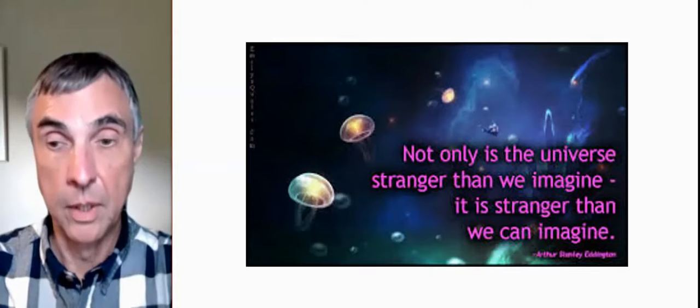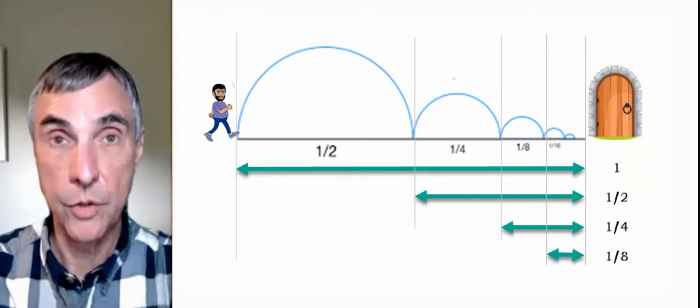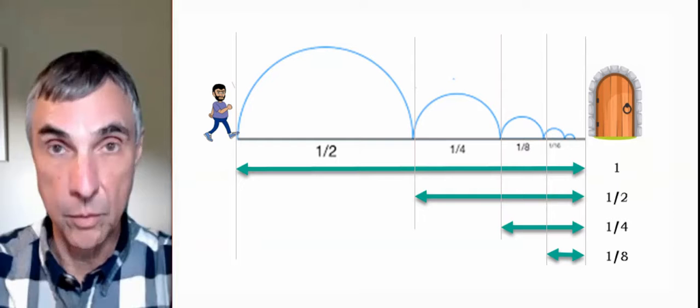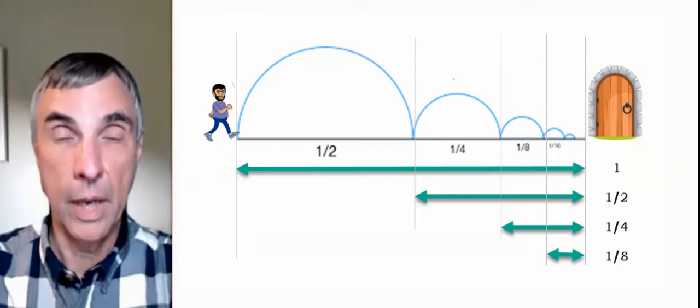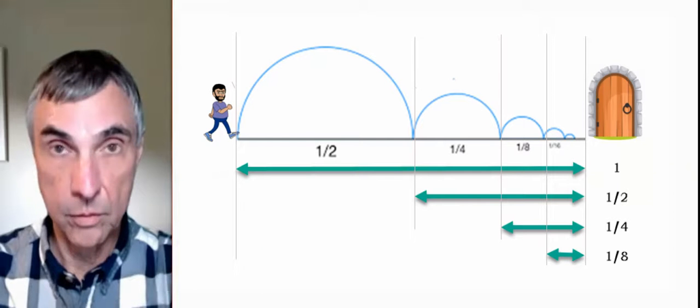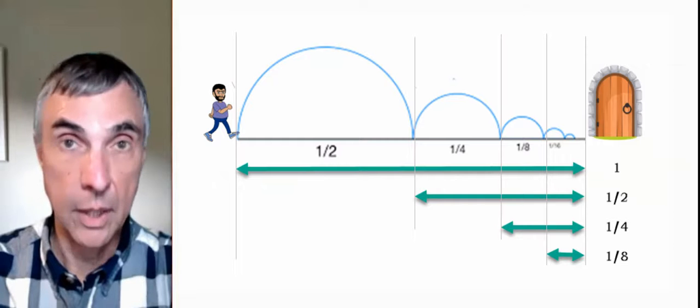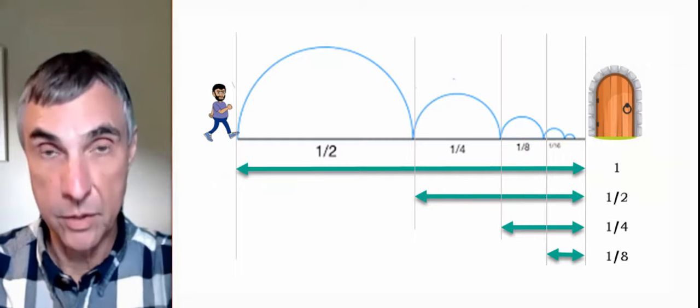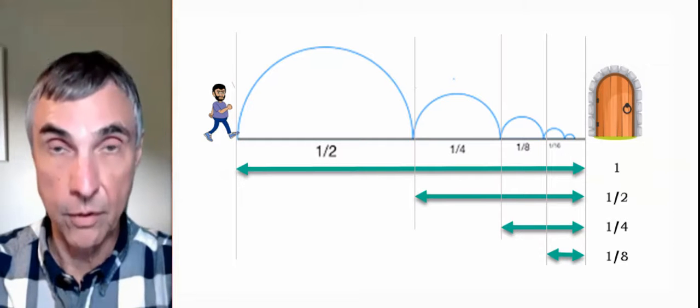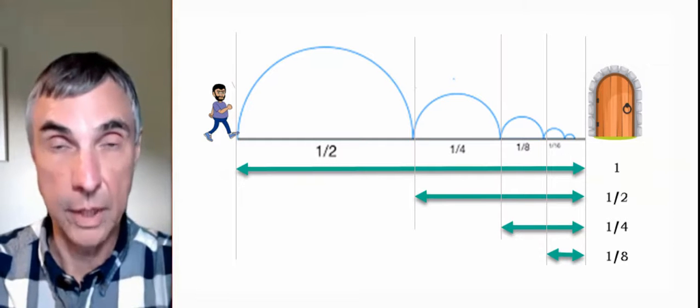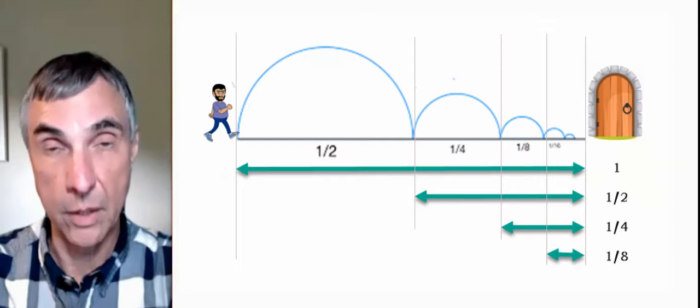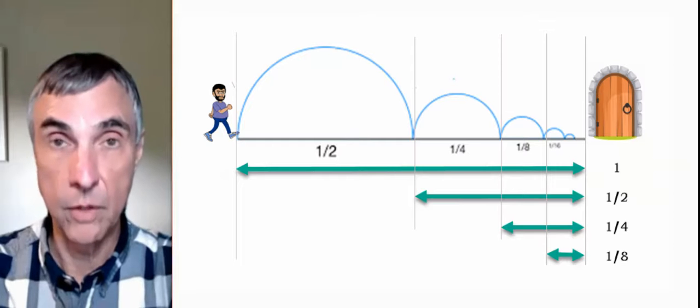This is a thought experiment. I am 1 unit from a door. 1 meter, 1 yard, whatever. And I go halfway towards the door. So now I'm 1 half of a unit away from the door. Now I go halfway of the remaining distance. Now I'm 1 fourth of a unit away from the door. I go half of the remaining distance. I'm 1 eighth of a unit away from the door.